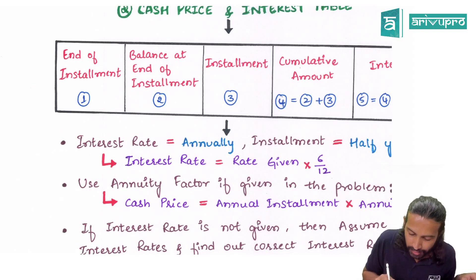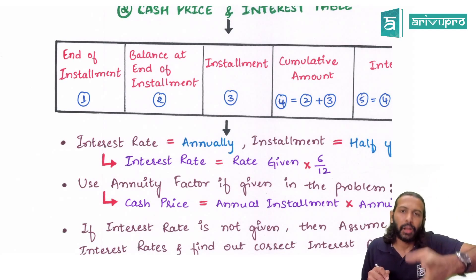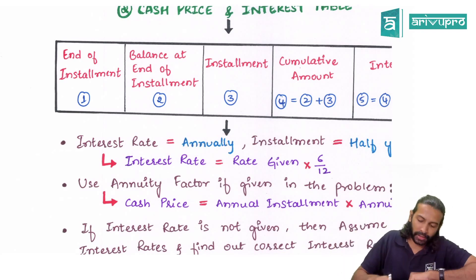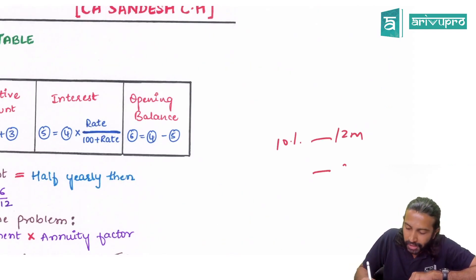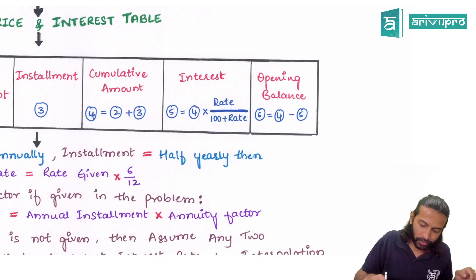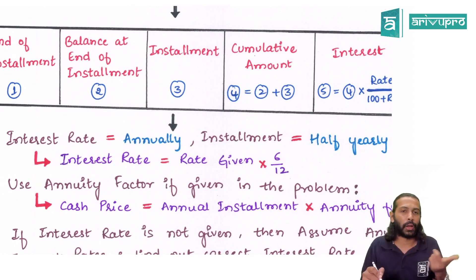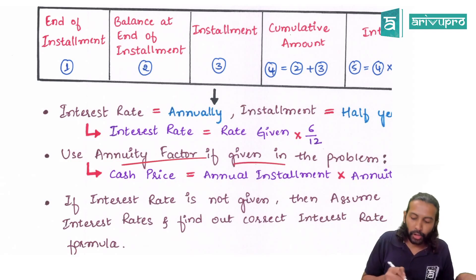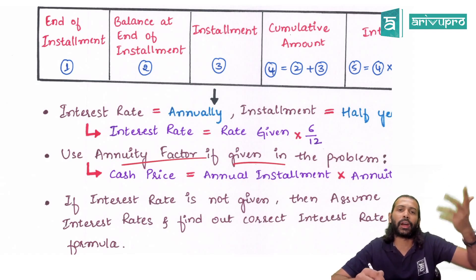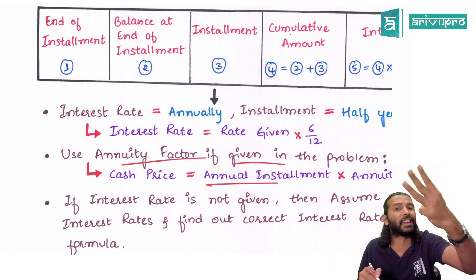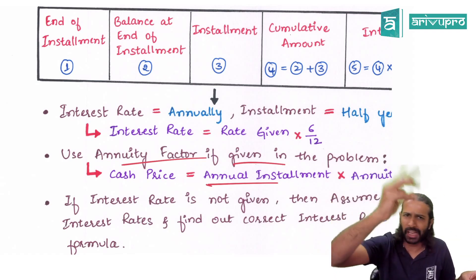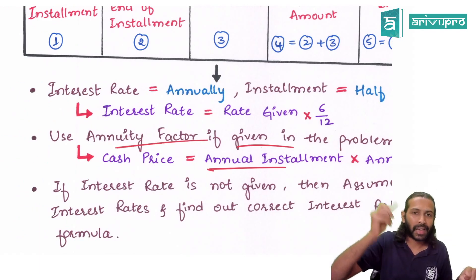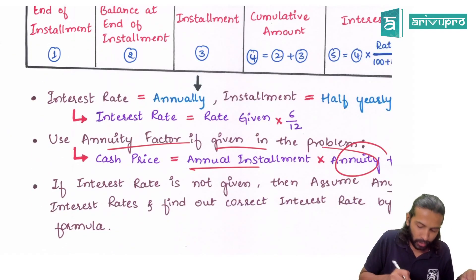Regarding interest rate: suppose the interest rate is given annually at 10% per annum, but installments are payable half-yearly. Then you cannot use the annual rate directly — you need to prorate it. If 10% is for 12 months, then for 6 months it is 5% (multiply by 6/12). This was seen in one of our problems. If an annuity factor is given in the question, cash price = Annual Installment × Annuity Factor. In our problem, 30,000 × 2.76 (annuity factor) gave the cash price. This is another way to find cash price.